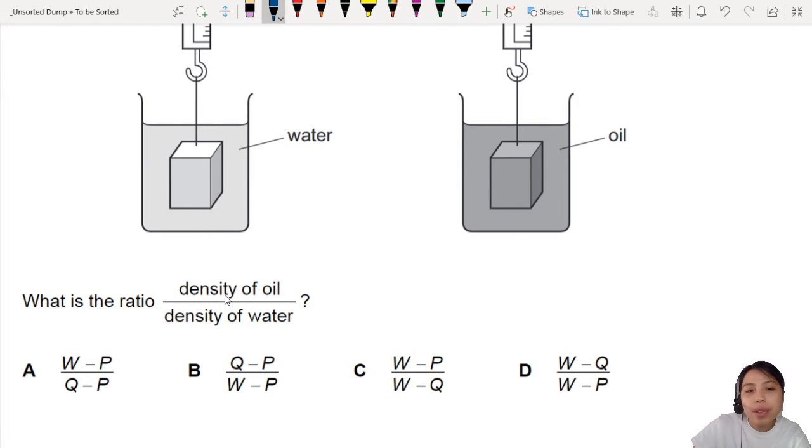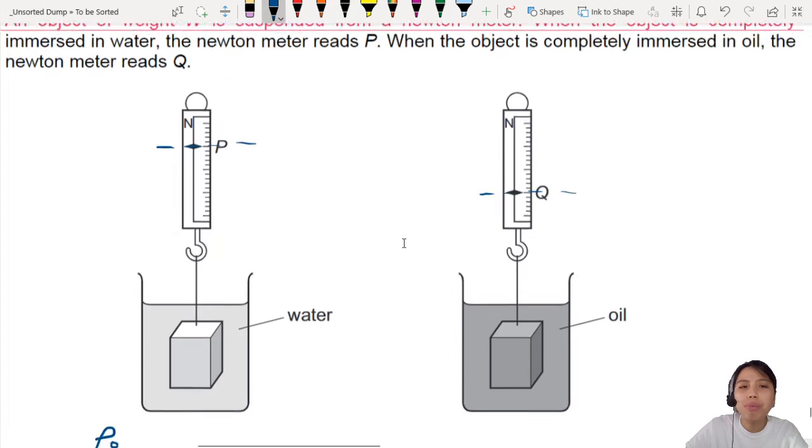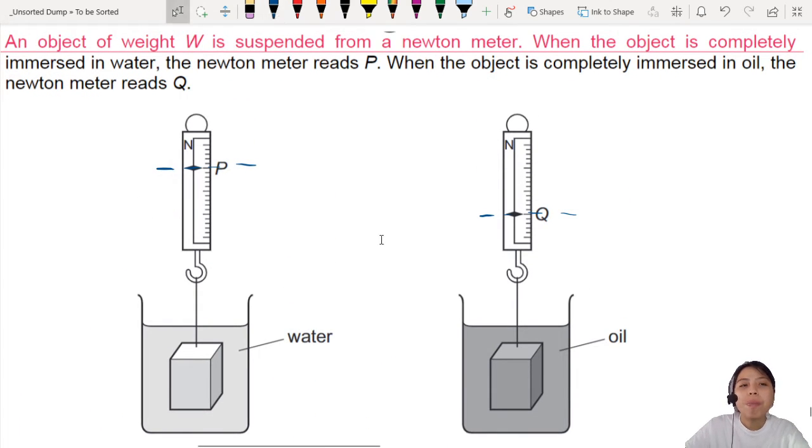So when you see ratios, if you can find the density of oil and you can find the density of water separately, then you can divide both, but you need to figure out how to find it.